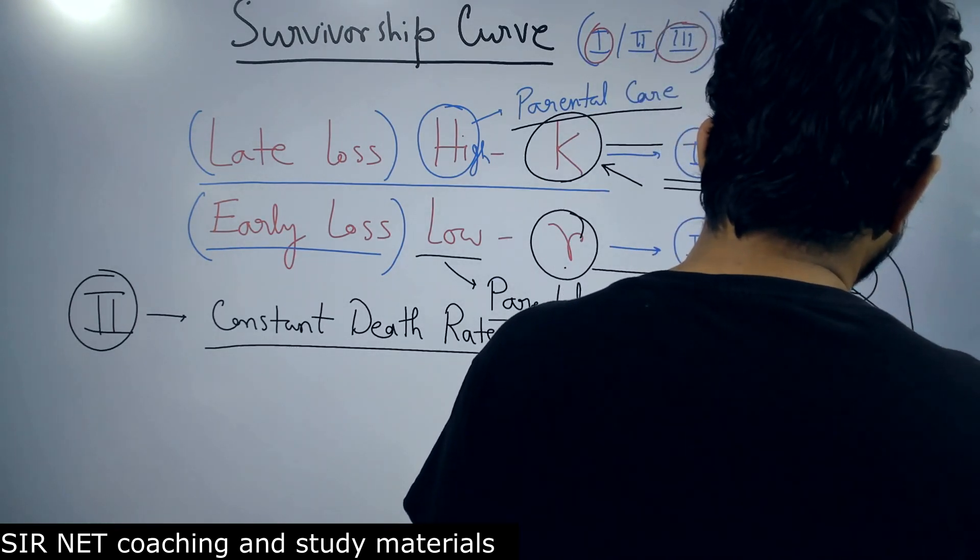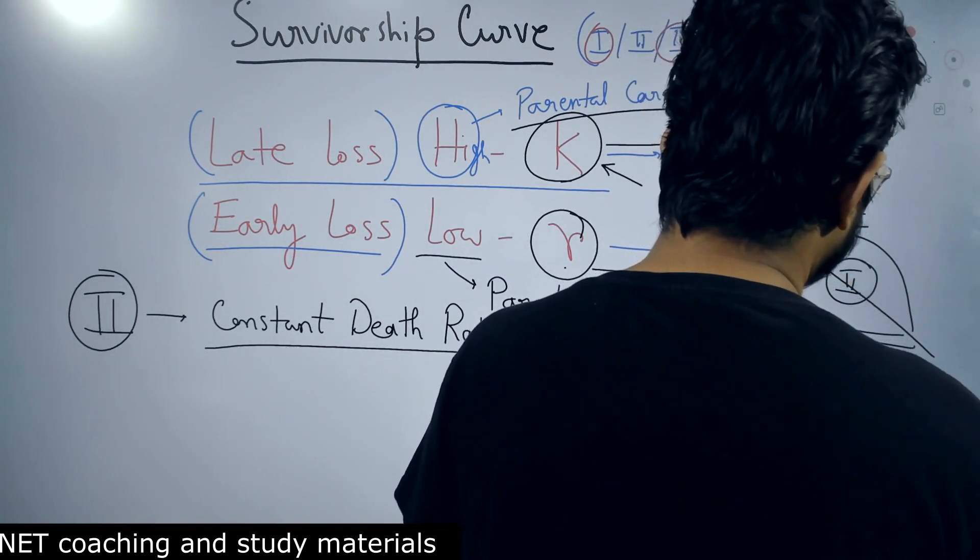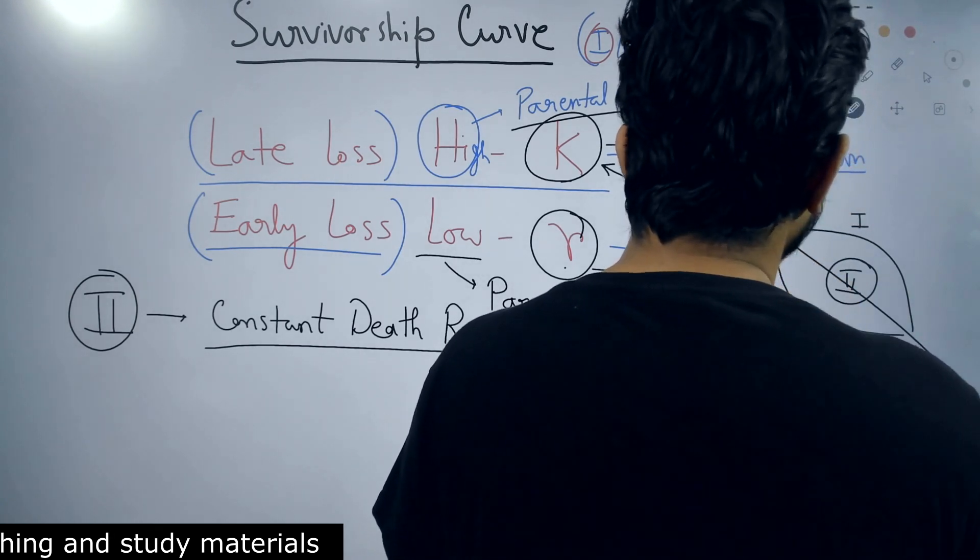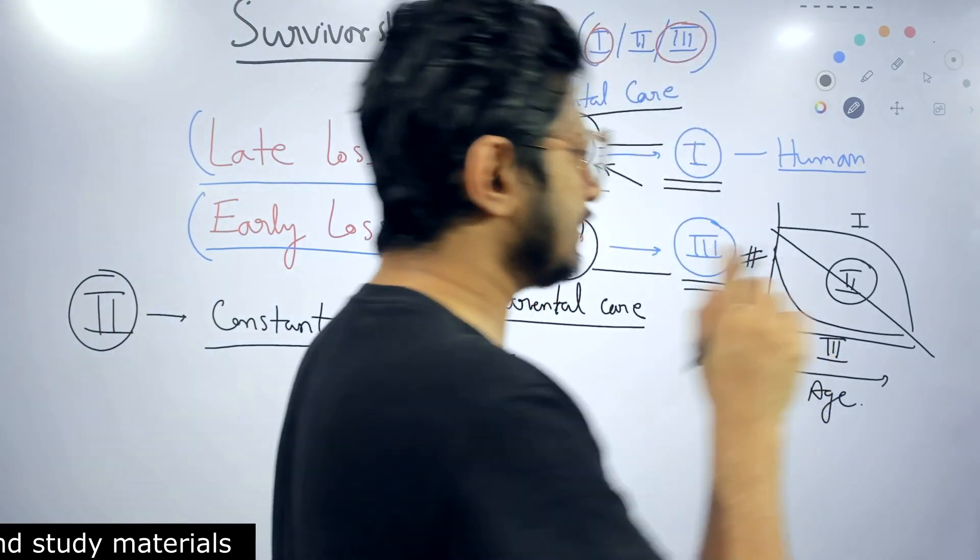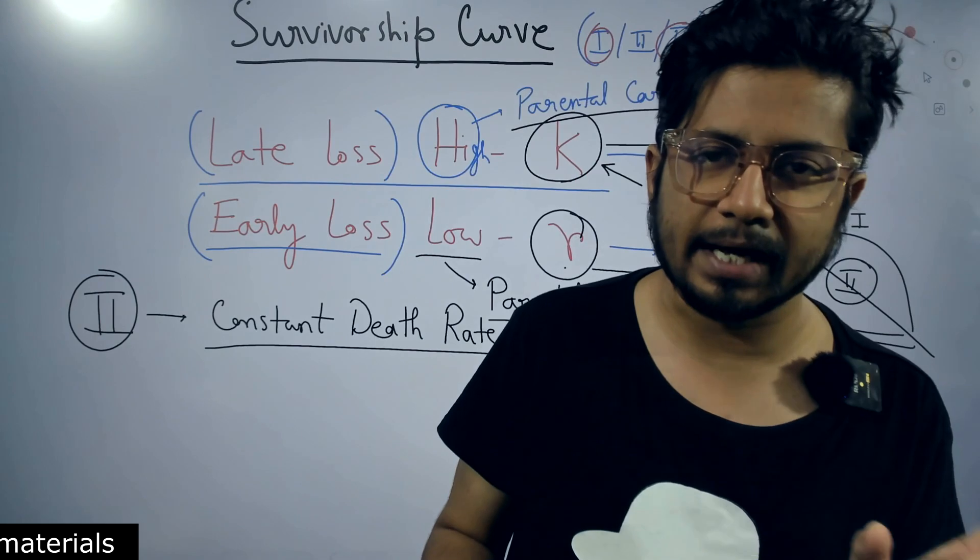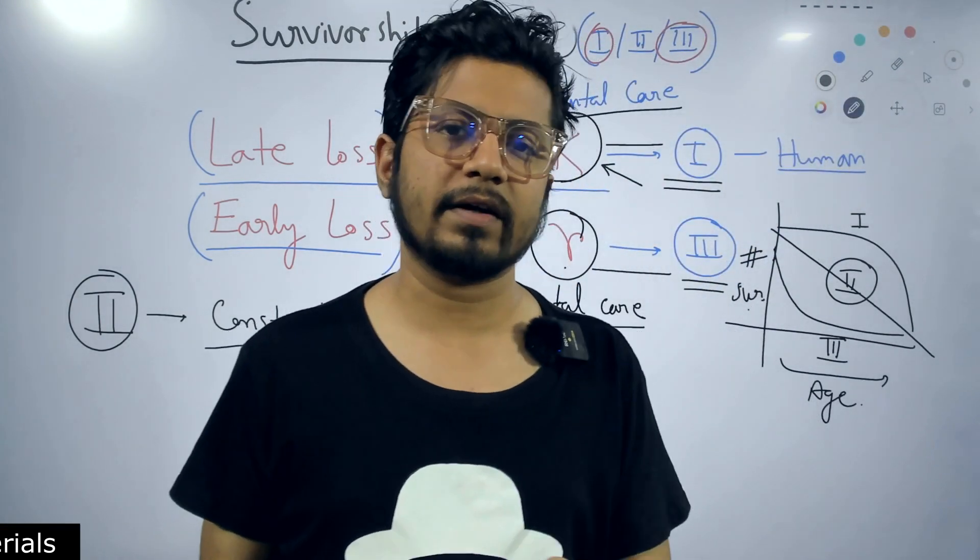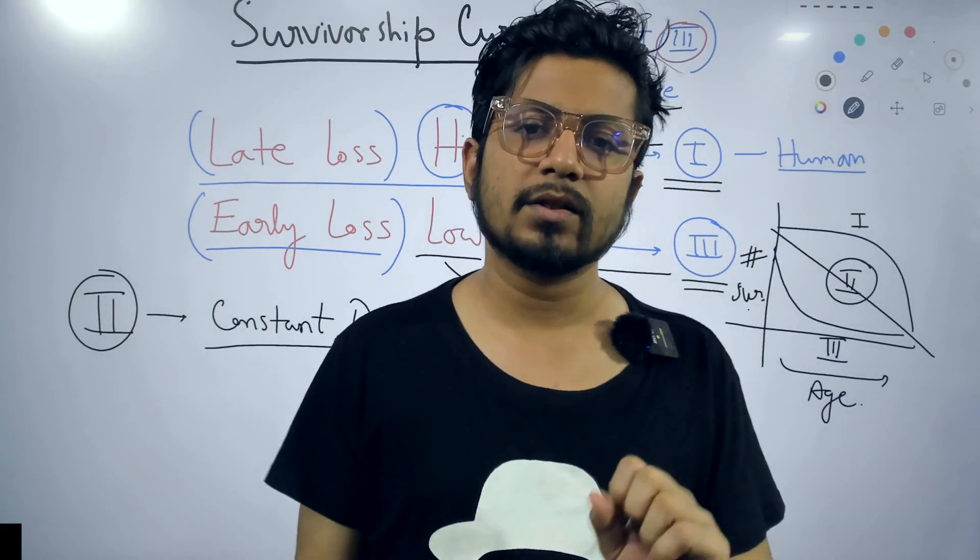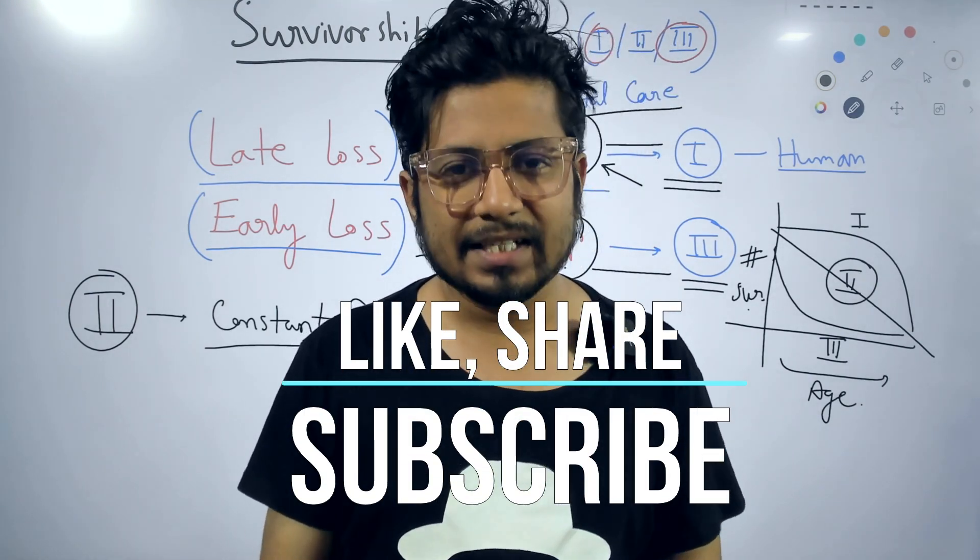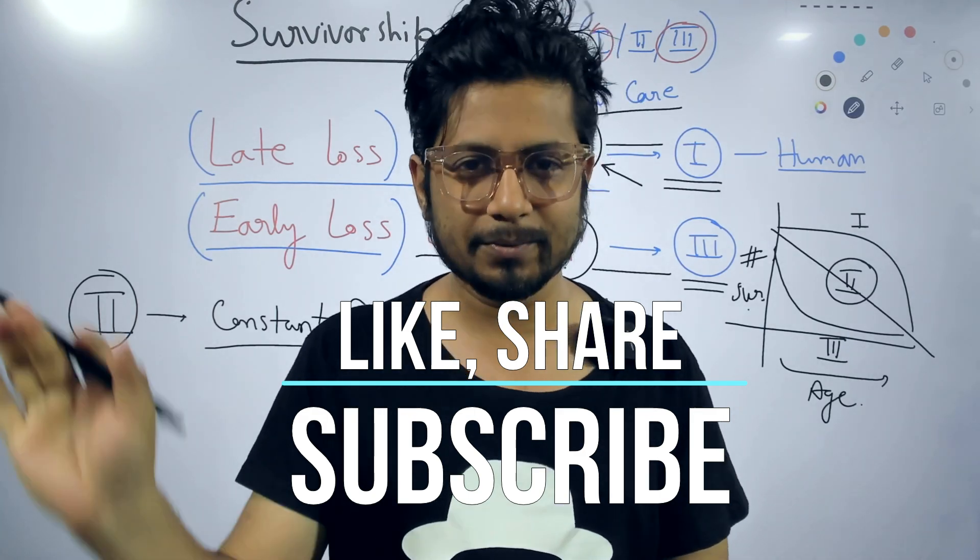This is for Type 1, this is for Type 3, and this is its axis—age, different points of their age—and this is number of individuals surviving. This is the survivorship curve. So I believe you have a clear idea now regarding Type 1, Type 2, and Type 3 survivorship curves. If you like this video, please hit the like button, share this video with your friends, subscribe to get more videos like that in future. Thank you, bye.